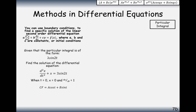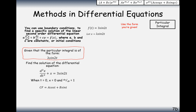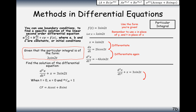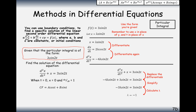We're told the particular integral is of the form lambda·sine 2t, so we use that directly rather than also suggesting a mu·cos 2t term. Differentiate once, differentiate twice, plug into the differential equation, and set it equal to 3 sine 2t. After substituting, we get minus 3 lambda·sine 2t equals 3 sine 2t, so lambda equals minus 1. The particular integral is therefore minus sine 2t.